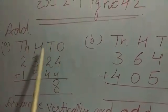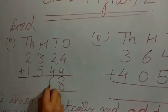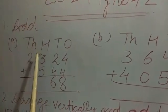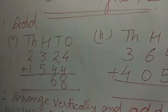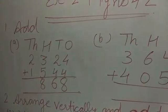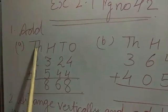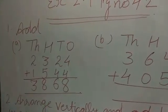Then come on 10s place, 2 plus 4 is 6. Then 100 place, 3 plus 5 is 8. Yes, very good. 3 plus 5 is 8. Then 1000, come on 1000 place, 2 plus 1 is 3. So it is our sum.